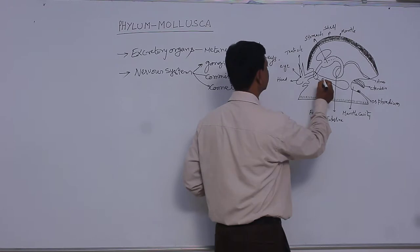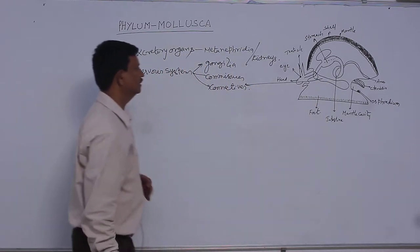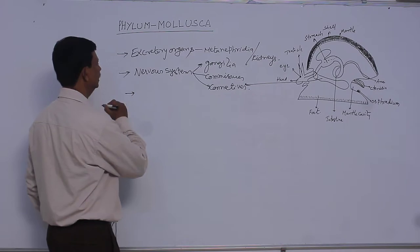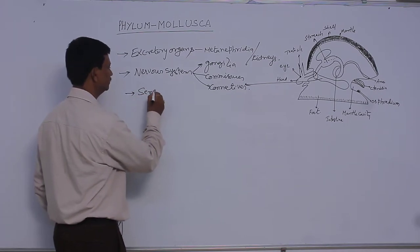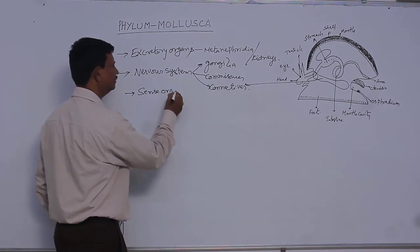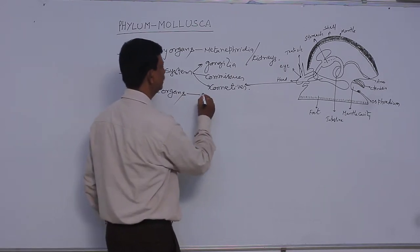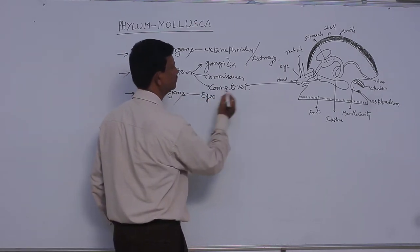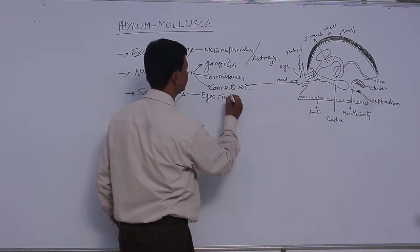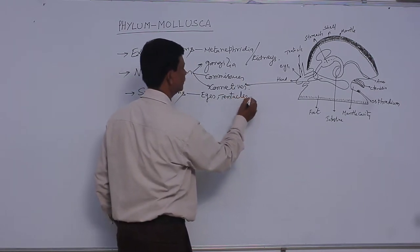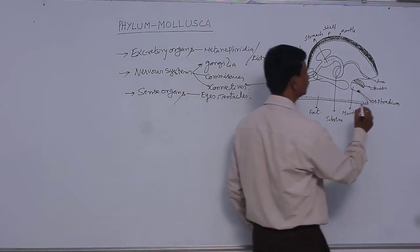This is the nervous system present in this phylum. And sense organs, there are different types of sense organs present in this phylum. They are known as the eyes and tentacles and osperidium is also present.